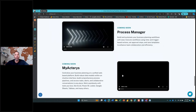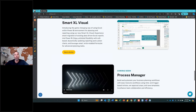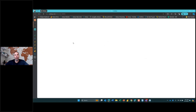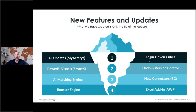Very exciting features that we've released and have planned for later this year. To recap some of the new features: My Actares, Smart Excel, an AI matching engine for direct reconciliation and mapping of new GL codes, the booster engine increasing performance, logic-driven dimensions for interconnecting data models, version control, and the new Business Central connector. Today we'll heavily focus on Actares write-back functions.